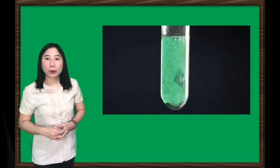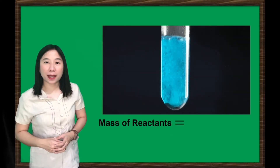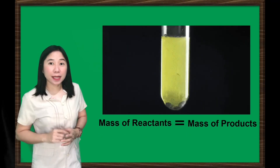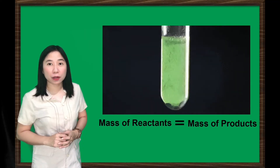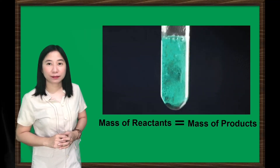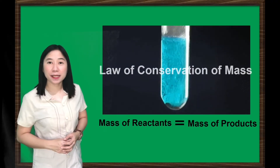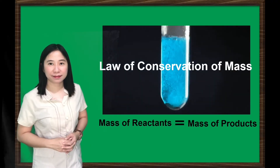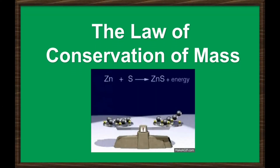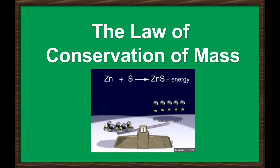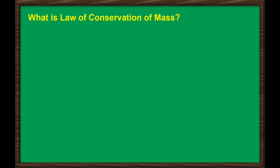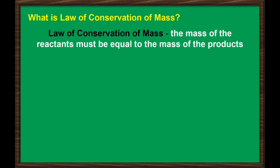During a chemical reaction, the mass of the reactants is equal to the mass of products. This means that the atoms are rearranged but they are not created nor destroyed. This idea can be explained by the law of conservation of mass. According to the law, the mass of the reactants must be equal to the mass of the products. No mass will be created nor destroyed during a chemical reaction. This simply means that mass is conserved.